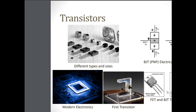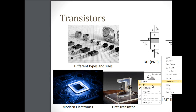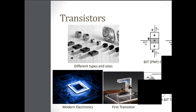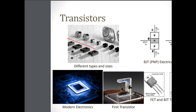Before getting into the detail of the transistor, let's look at the physical diagram of how transistors look. You can see there are five different shapes of transistors available in the market, but the common thing across all of them is that they always have three legs. Other than that, the shape, model, company, and manufacturer may all be different.